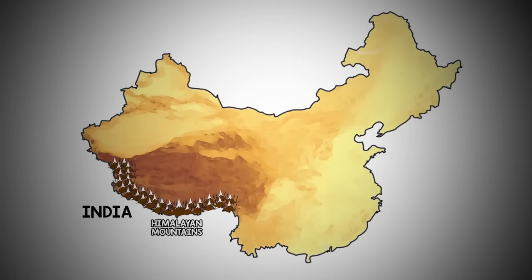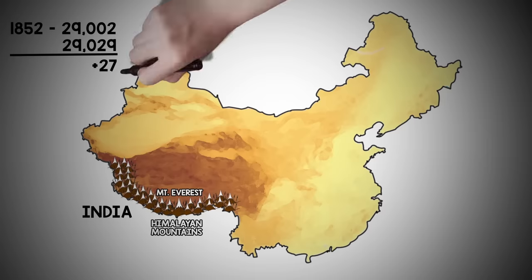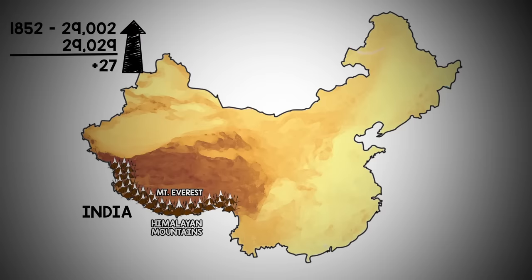The Himalayan mountains house the tallest peak in the world, Mount Everest. The first measurement of Mount Everest was taken in 1852 and put the peak at 29,002 feet. However, the most recent measurement clocked in at 29,029 feet, meaning the massive peak has jumped 27 feet. The tectonic plates underneath the mountain account for the changes in height.